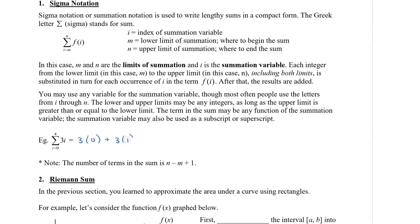So 1 is now plugged in for i. So now we have 3 times 1. The next integer is 2. So we have 3 times 2. And then 3 times 3. And then 3 times 4. And we stop here because the upper limit is 4.